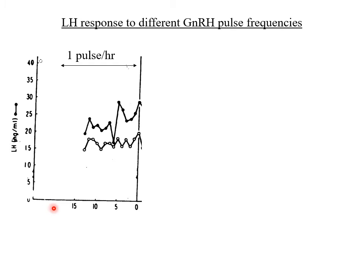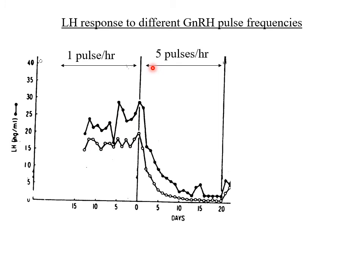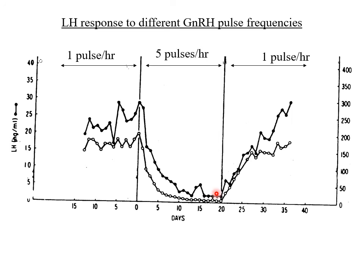This was a fairly long-term experiment, with the time course measured in days and LH levels on the vertical axis. Initially, a physiological frequency of one pulse of GnRH per hour was given, producing nice reasonable levels of both LH and FSH. Then it was changed to five pulses per hour — something much more supraphysiological. Both hormones declined, even though five times as much GnRH was being given. To show this was reversible, the frequency was returned to one pulse per hour and the system resumed again.